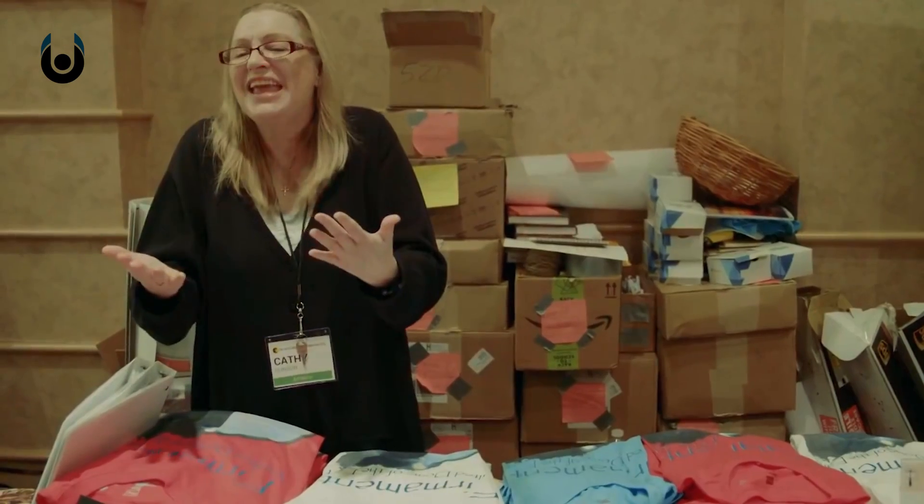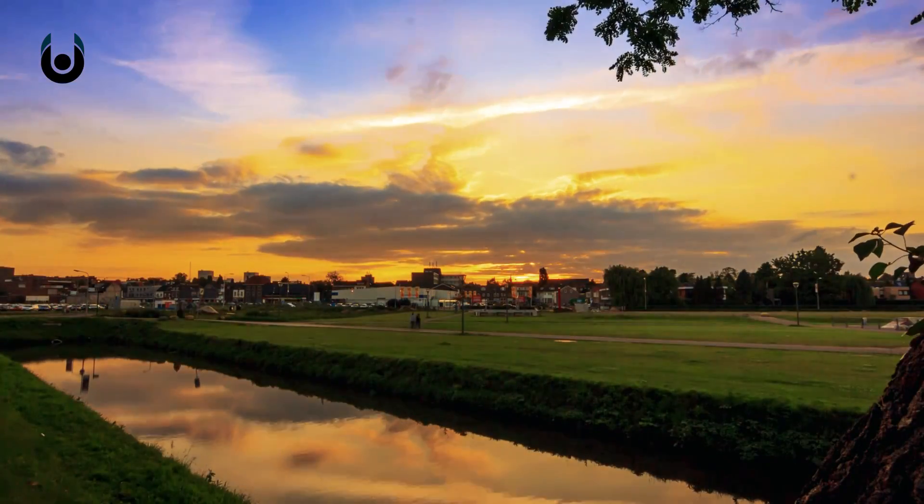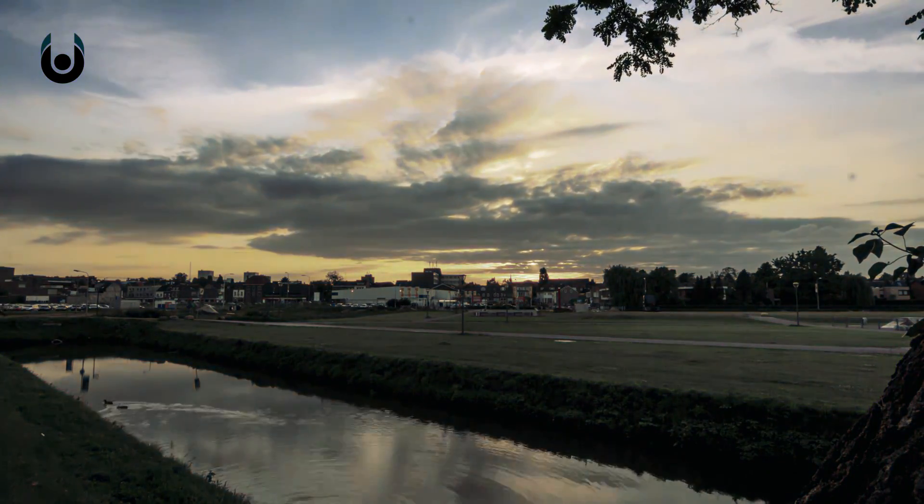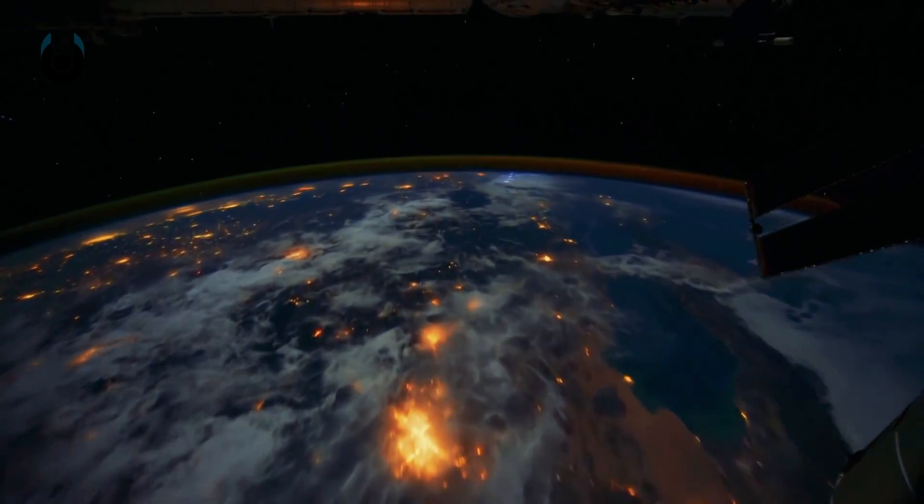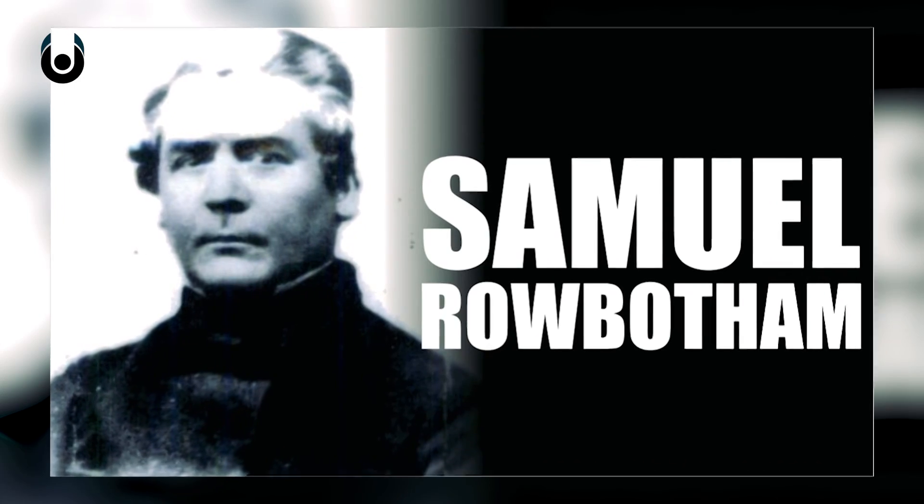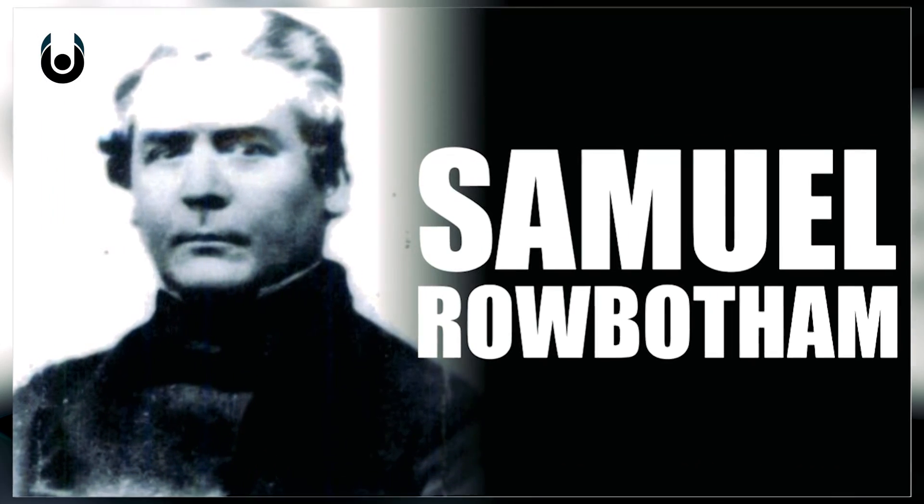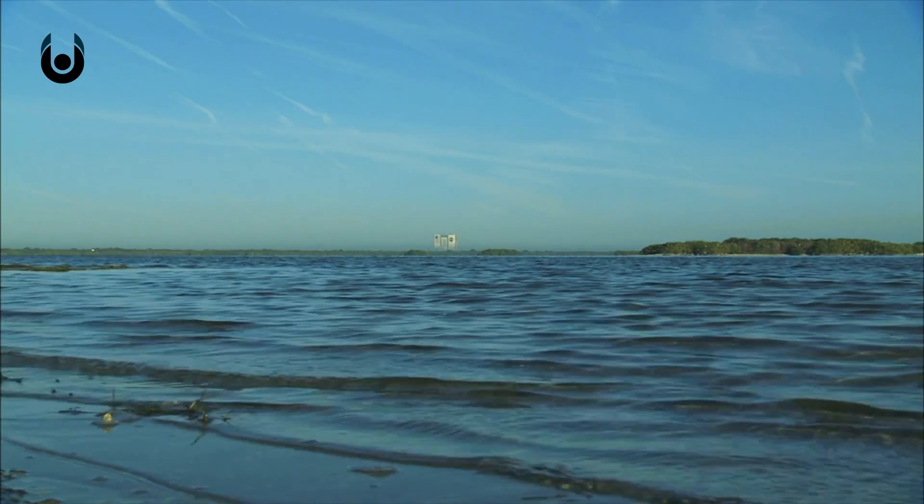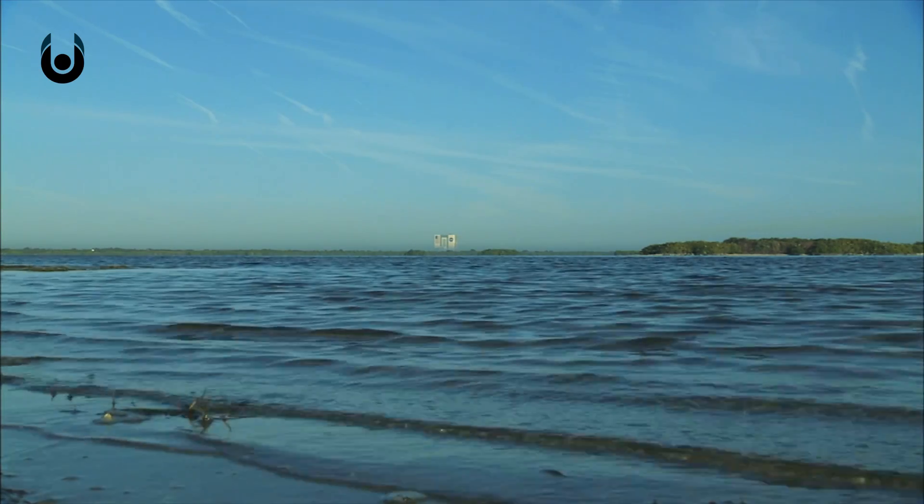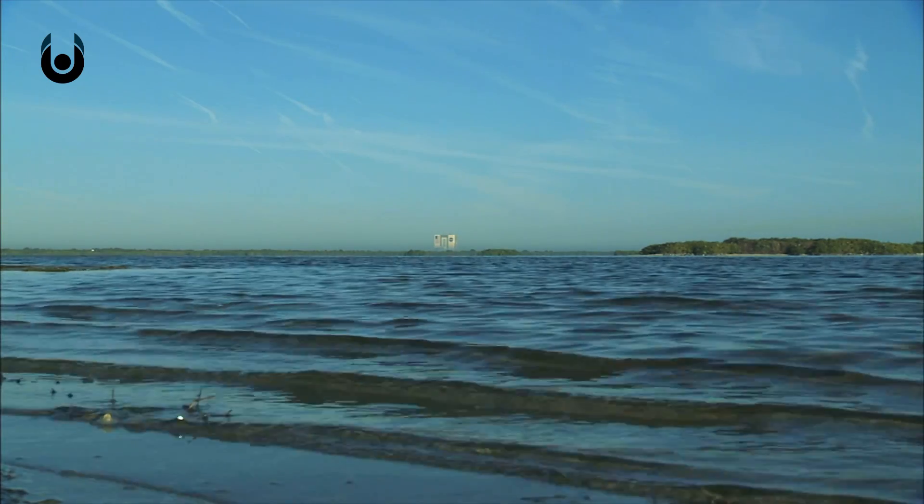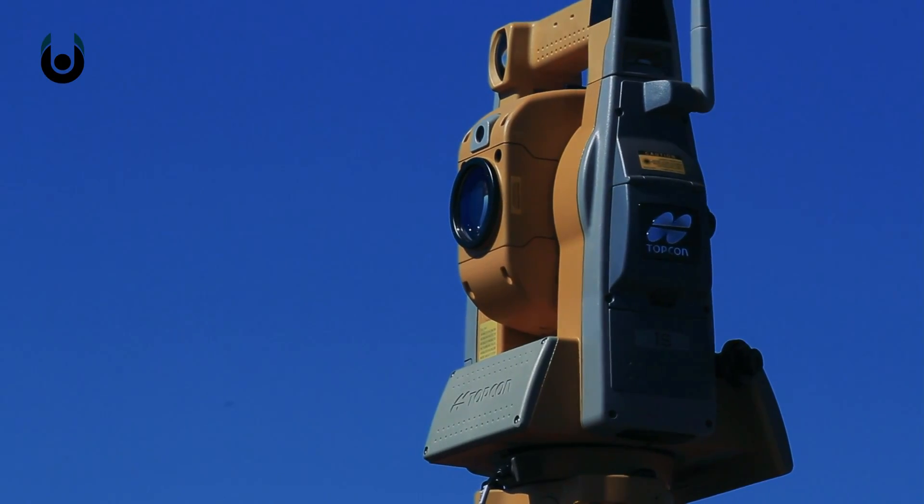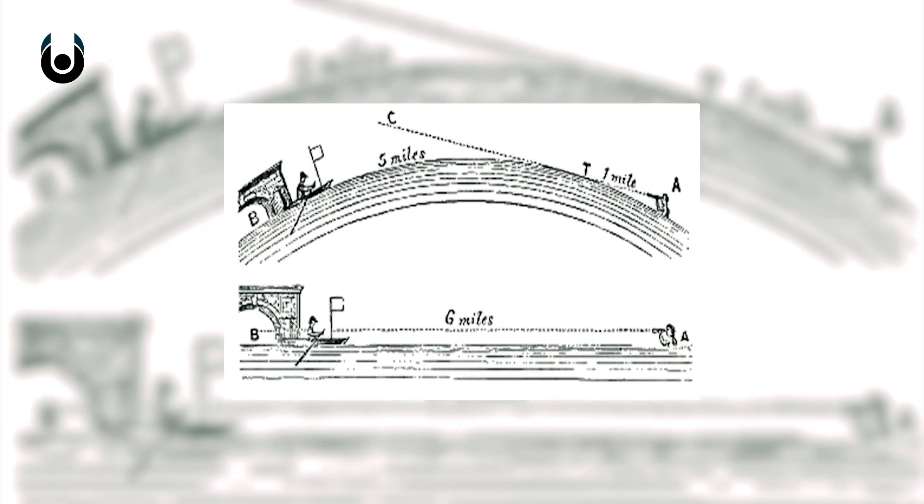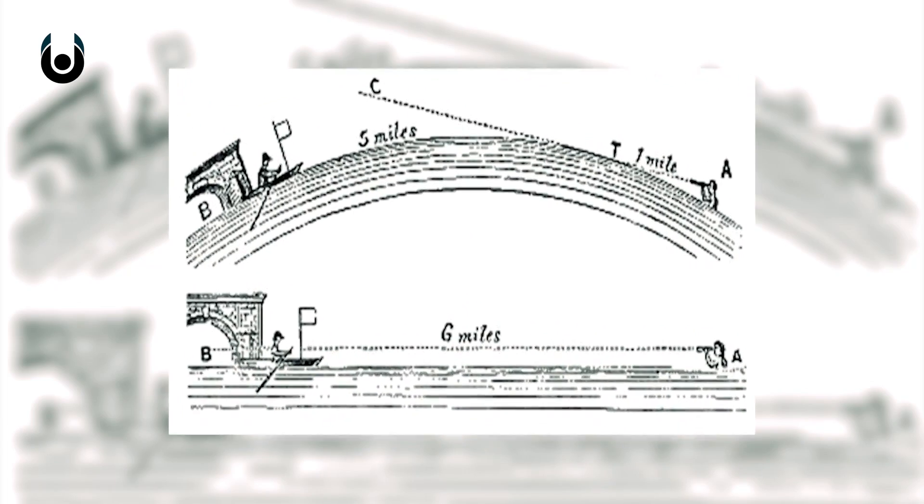An experiment called the Bedford Level Experiment was a series of attempts beginning in the late 19th century to show the curvature of the Earth's surface. First conducted by flat Earther Samuel Burley Robotham, observations along a long straight stretch of drainage canal in the English county of Norfolk seemed to confirm that the Earth is flat. The basic idea was to use a surveyor's telescope to observe marks at a uniform height above the water spaced three miles apart. If the Earth is curved, the marks will not line up.